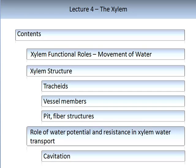We will start this lecture with a review and overview of the functional roles of the xylem. We will concentrate on the movement of water. In order to understand the movement of water, you need to understand the structure — the xylem is a very special biological structure. We will look specifically at the tracheids and the vessel members, as well as the pit and fibre structures, and how these work together to move water up through the plant. The role of water potential, resistance and tension is essential in the xylem water transport mechanism.